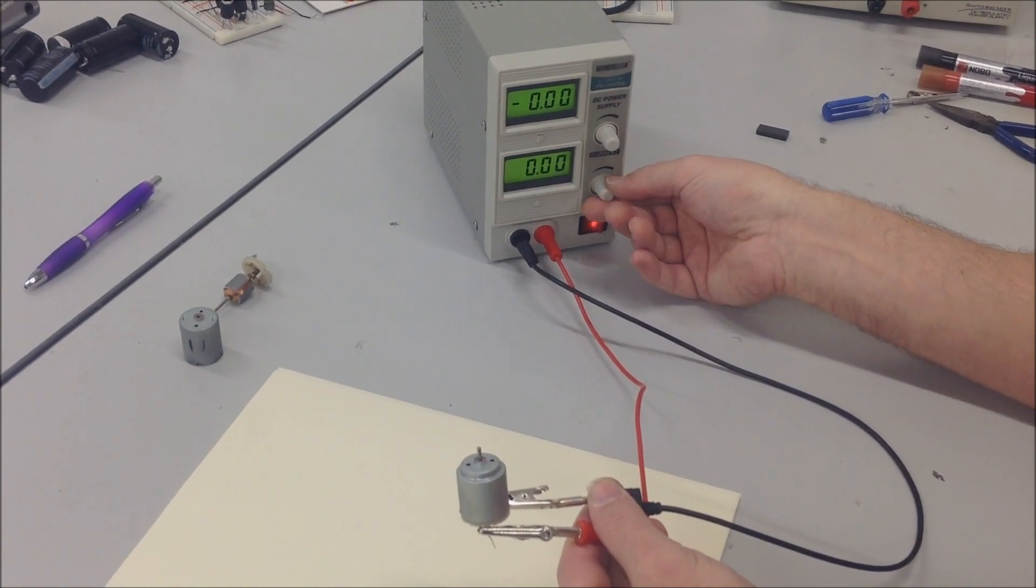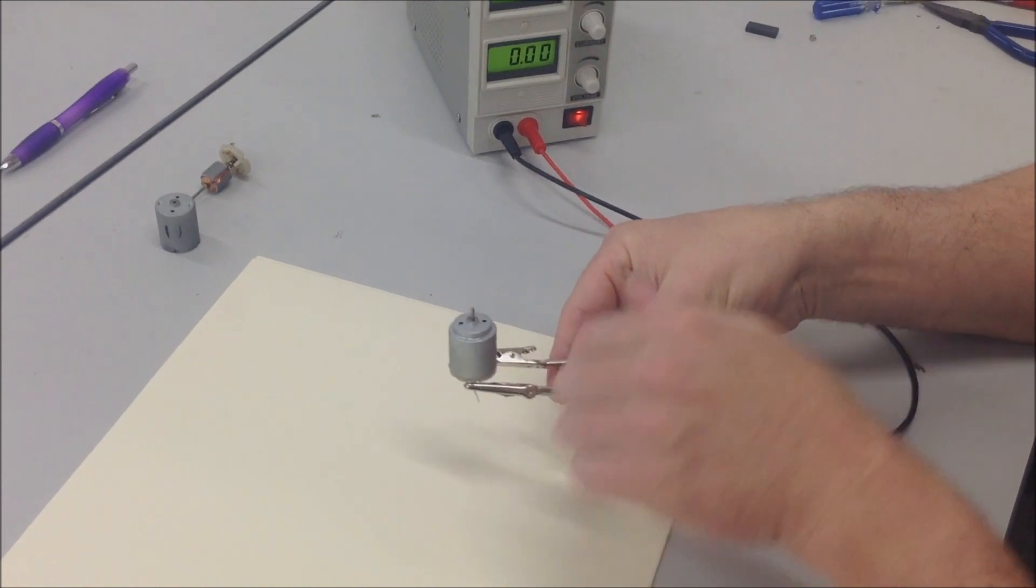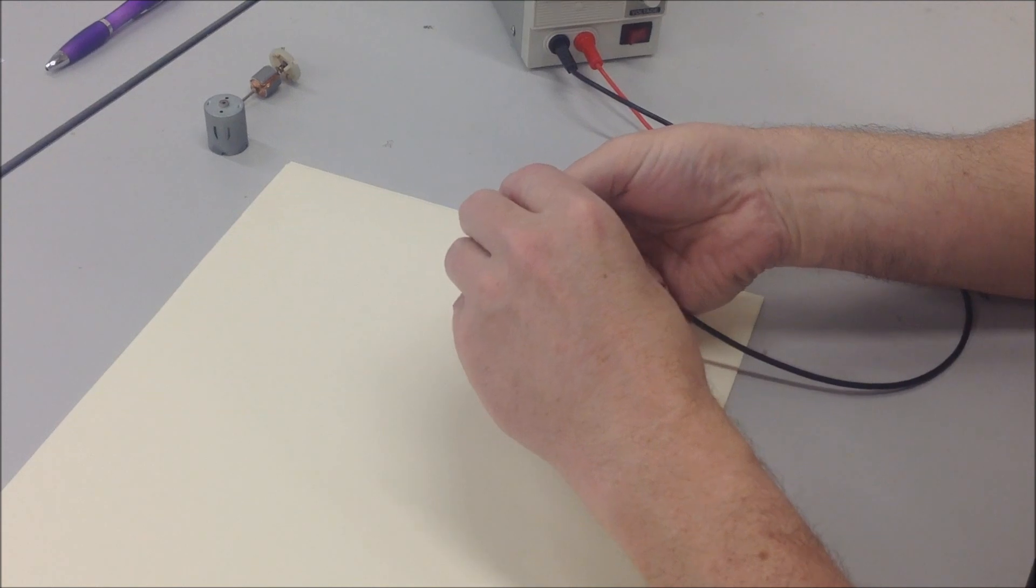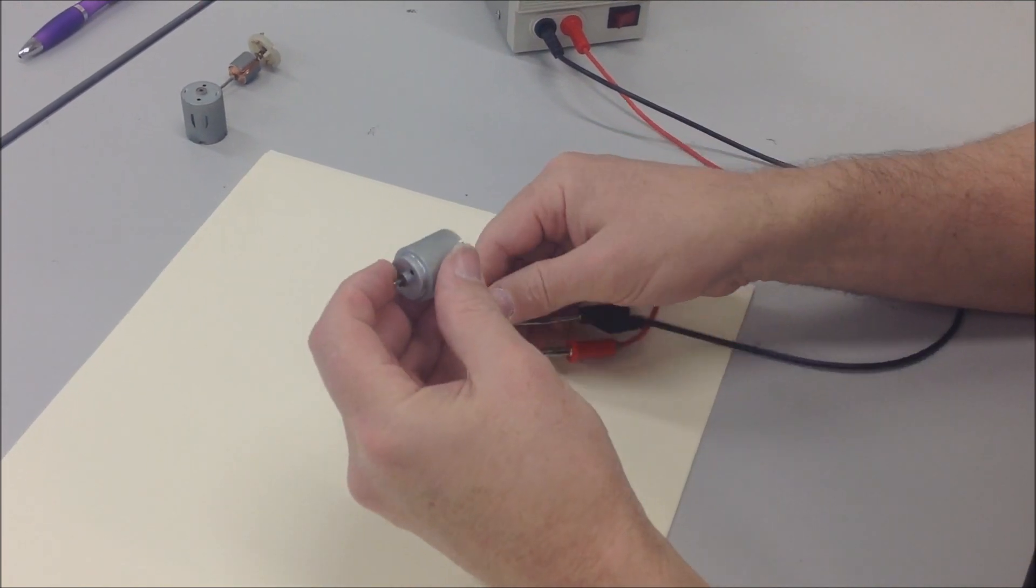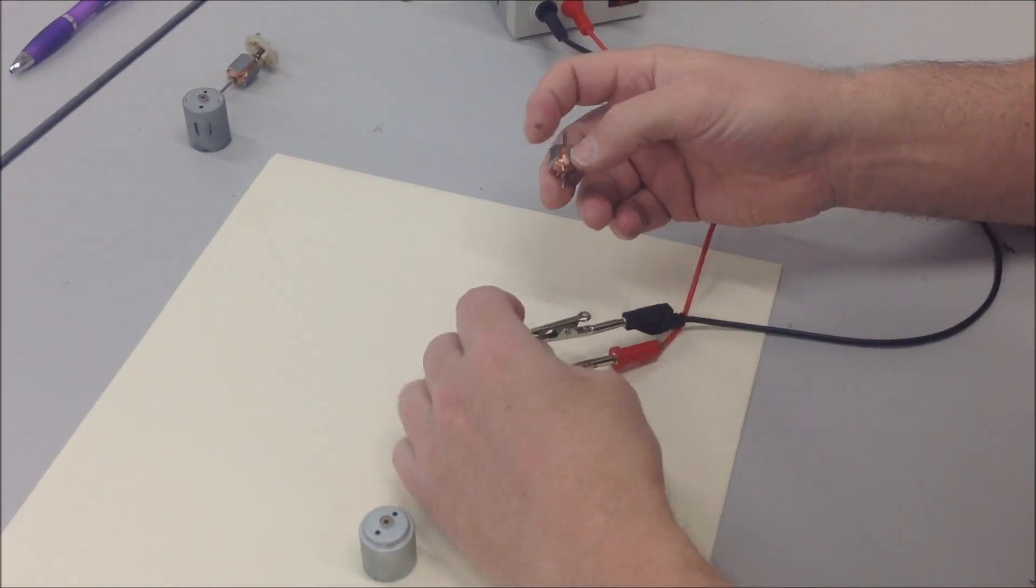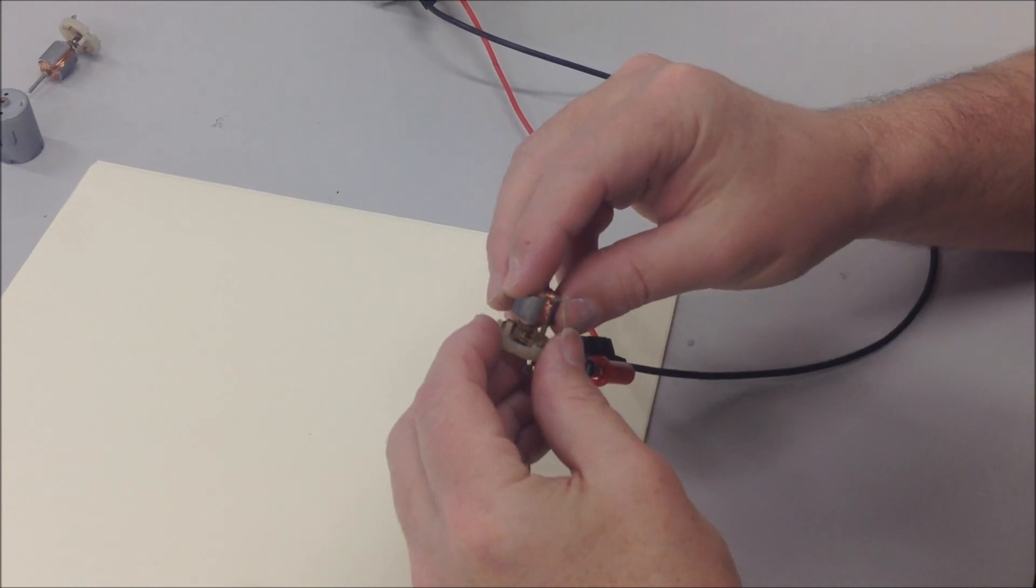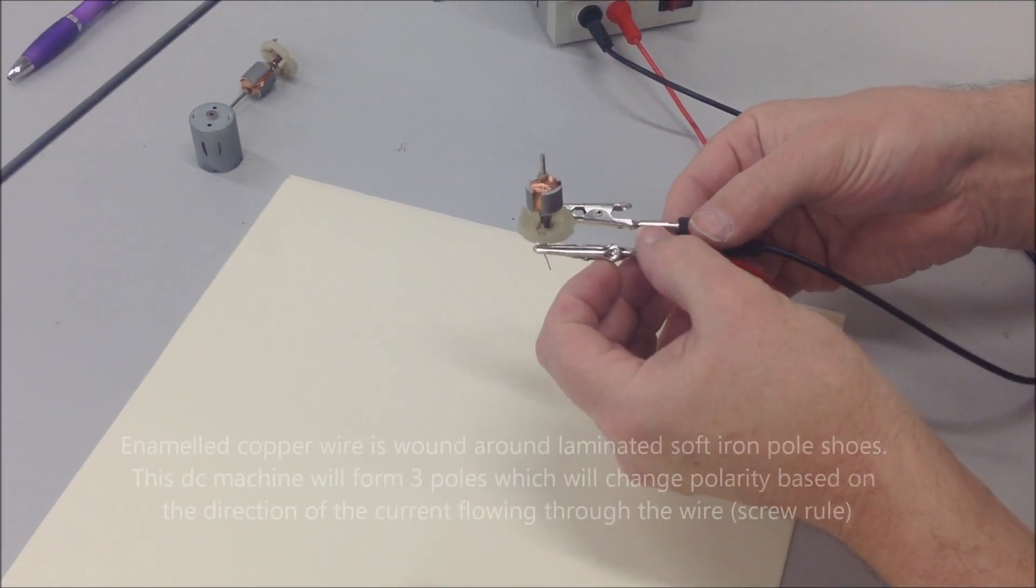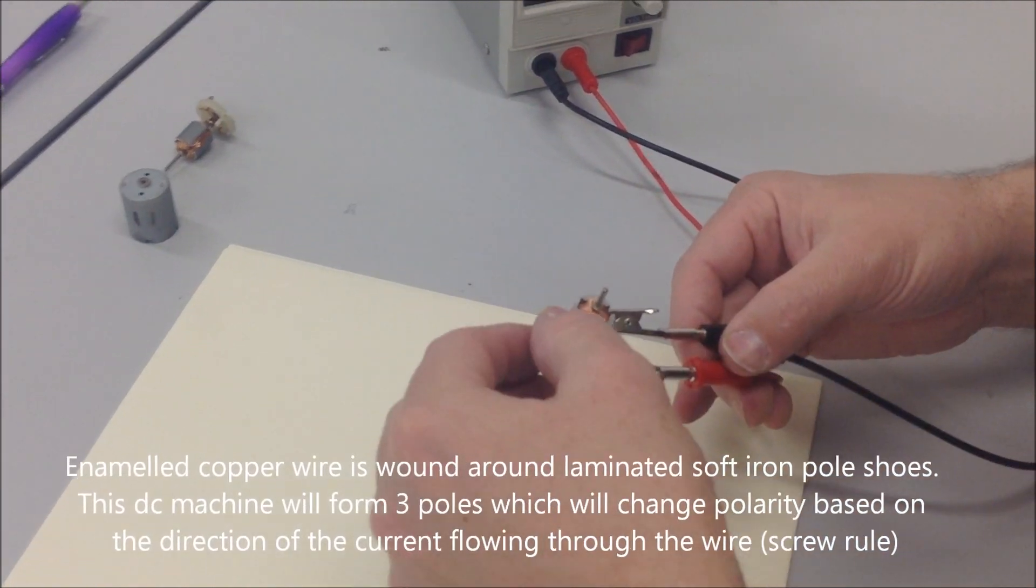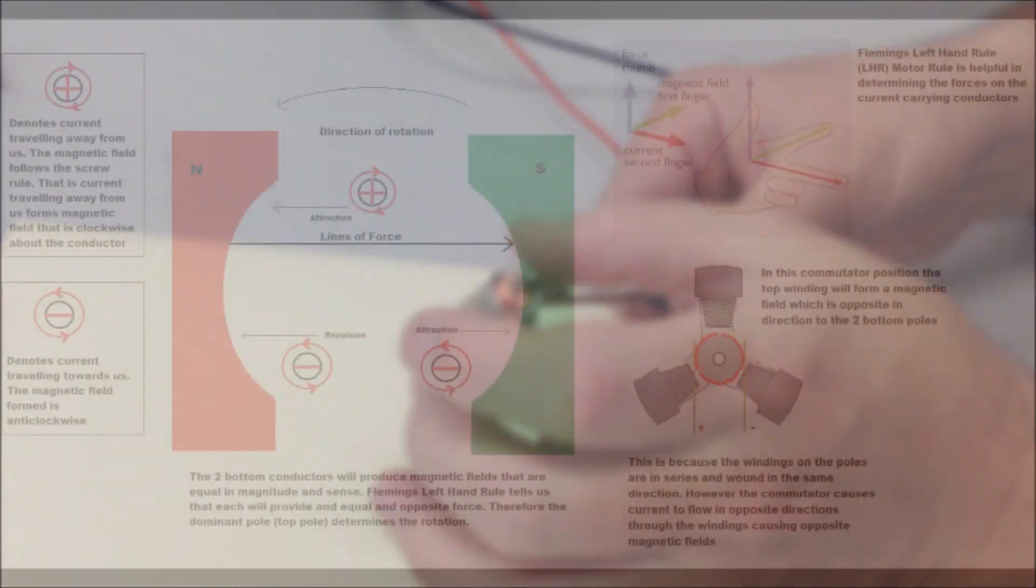Now I'm going to take the voltage right off. I'm going to switch it off just for a second. I'm going to remove the cover from the motor. I need to be careful here on this bit. There we go. So we can see a motor, three pole motor, three windings. This is a pole formed here, here and here.